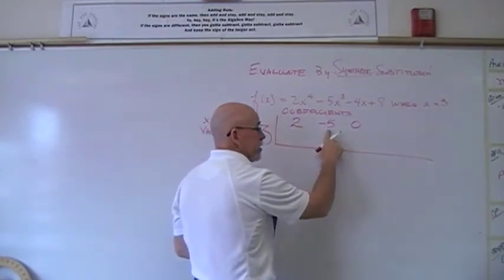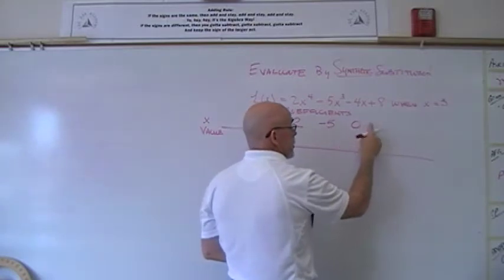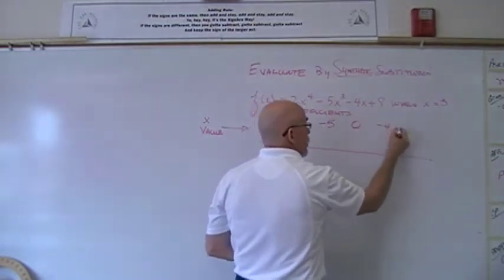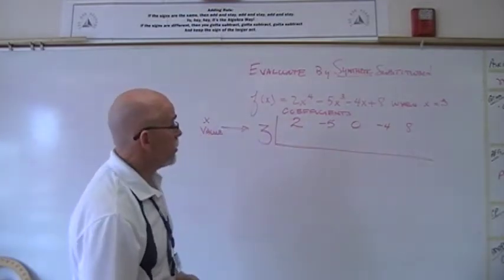So we've got x⁴, x³, x², then the coefficient for x¹, and then the coefficient for x⁰, right, that constant term, positive 8.